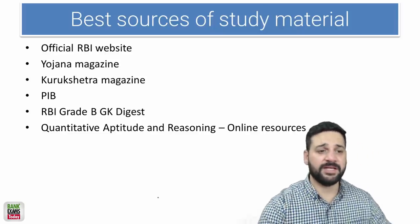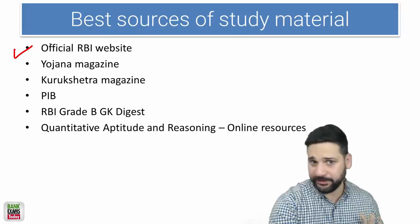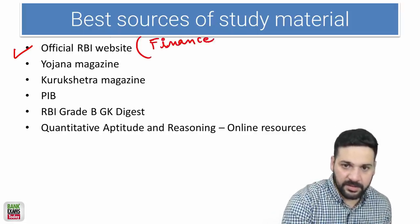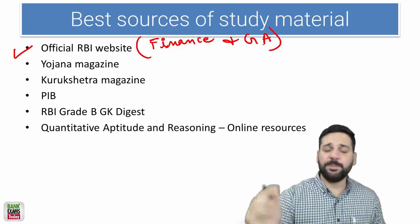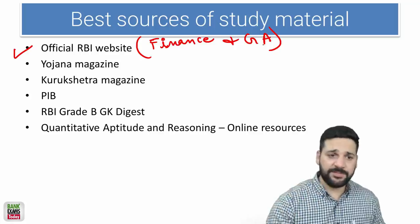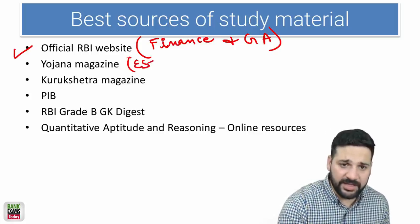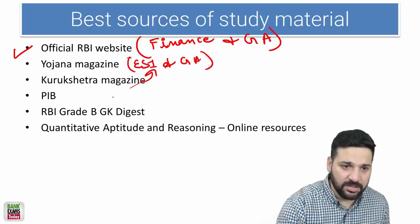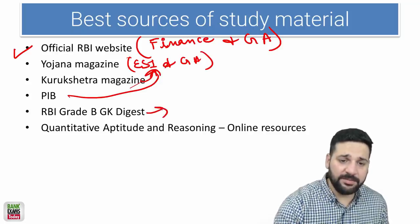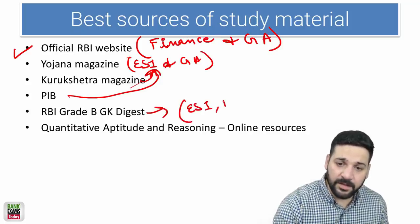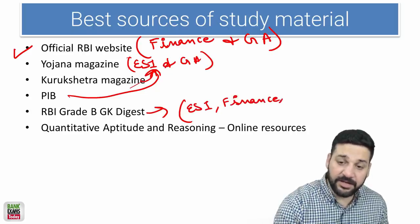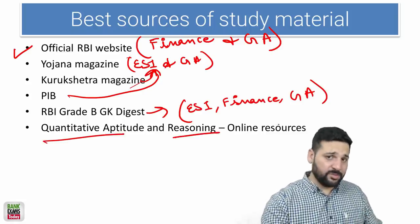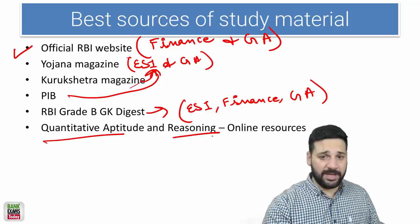Best sources of study material: for finance and GA, best source is RBI's official website. Yojana magazine is for ESI and GA. Kurukshetra is again for ESI and GA. RBI Grade B GK Digest is important for ESI, finance, and GA. Quantitative aptitude, reasoning, English, there are a lot of online resources available, but I personally teach quantitative aptitude on Bank Exams Today.